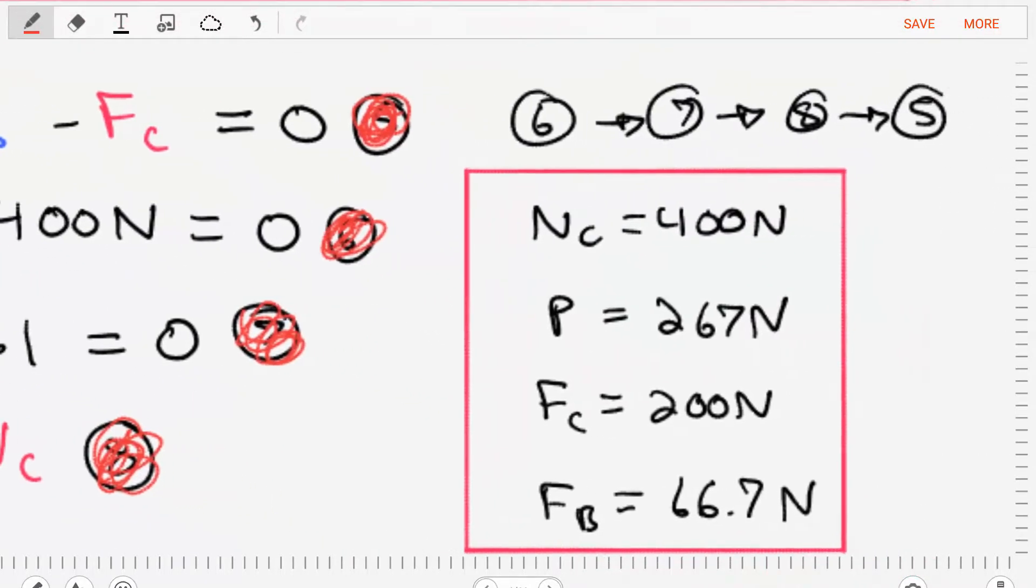When we do that, we'll find that the normal force at C is 400 newtons, that the force P is equal to 267 newtons, force C is equal to 200 newtons, and force B is equal to 66.7 newtons.